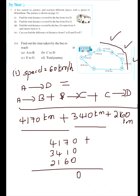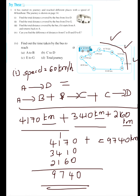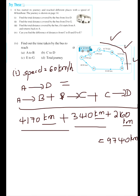Adding the digits: 0, carry 1, 4, 7, 9 — so the answer is 9740 km. Everything is in km, so the answer will also be in km. Finally, the total distance covered by the bus from A to D equals 9740 km.